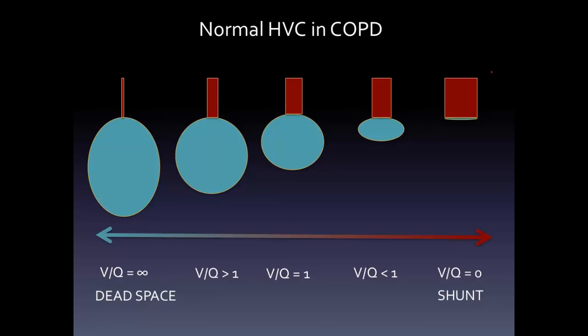The ideal situation is for perfusion to match ventilation and for VQ to be as close to one as possible. In a patient with COPD, there are areas of hypoventilation in their lung. The normal way the body compensates is by reducing perfusion in those areas — a concept known as hypoxic vasoconstriction. In areas of hypoventilation, there's alveolar hypoxia, and as a result, perfusion to those areas is decreased by hypoxic vasoconstriction, bringing the VQ ratio closer to one.